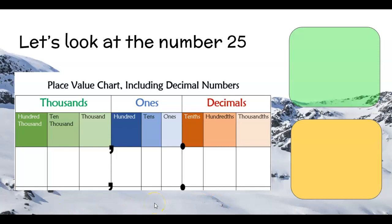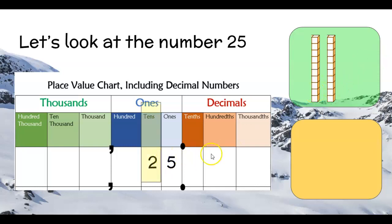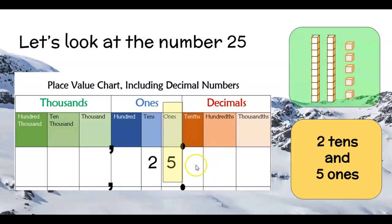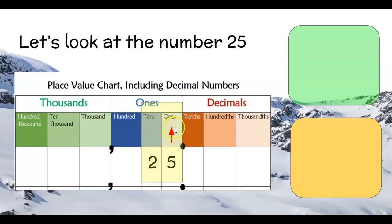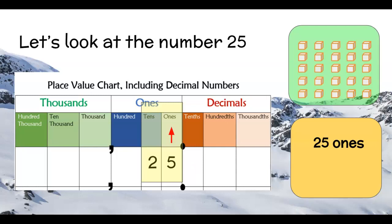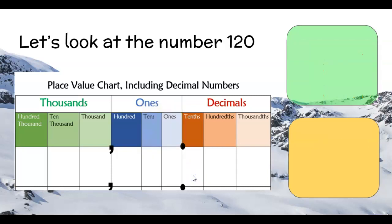Looking at the number 25, when we write it into our place value chart, we put a 2 in the tens place. We can represent this with two ten-sticks. We also have the 5 in the ones place — five ones. We have our number 25. We can also look at this another way: as ones, so we could say we have 25 ones, which would be 25 individual little blocks. There are different ways of looking at the same number.